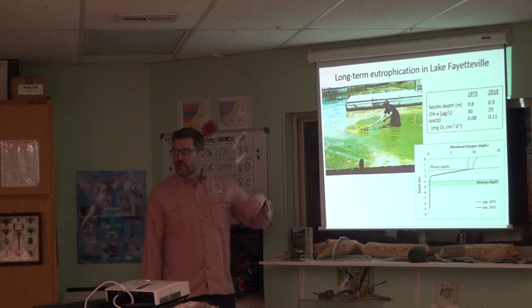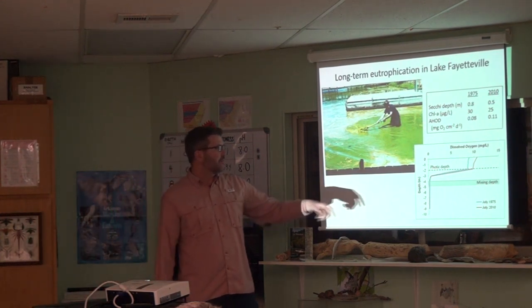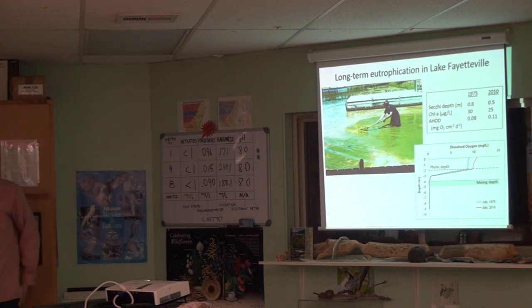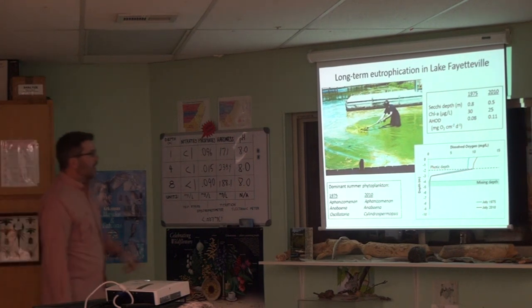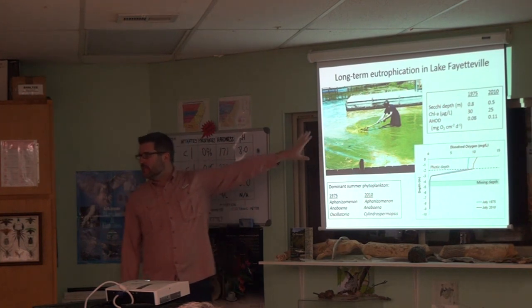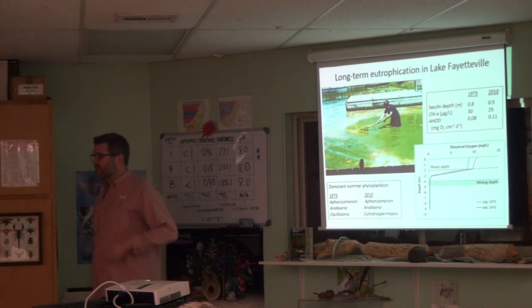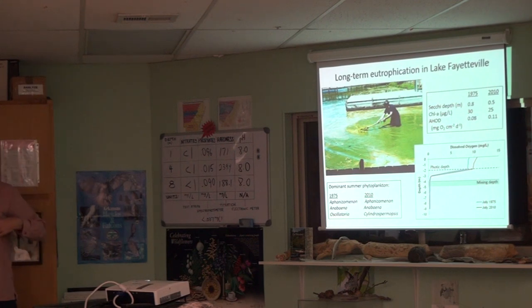Here is a common dissolved oxygen profile for Lake Fayetteville, the blue line being 1975, the red line July 2010. And you can see the interesting thing about this lake, or unfortunate thing, is that when you get to about 3 meters depth, 3 meters below the lake surface, there's no oxygen in the water. And that's true each summer. It loses its oxygen very rapidly compared to most lakes in the area. And that's because it's so productive. The dominant algae, what make the water green, haven't changed much in 40 years. Two of these genera, aphanizomenon and anabina, are both really problematic, toxic, toxin-producing algae. They were here 40 years ago, they're here now.